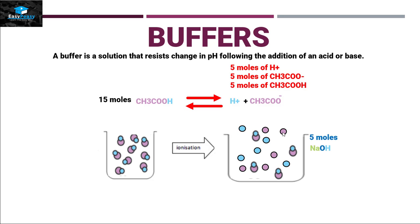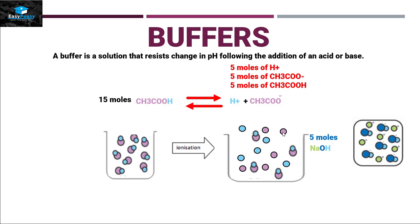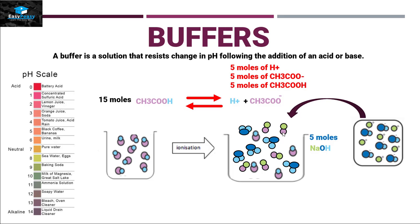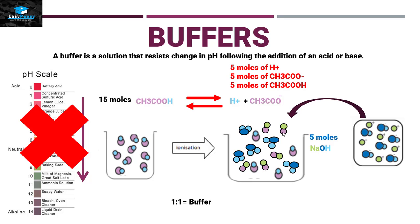Now adding 5 moles of NaOH to this solution: NaOH is a strong base, so it dissociates into 5 moles of Na⁺ and 5 moles of OH⁻. The Na⁺ ions contact the 5 moles of acetate ion, and all the OH⁻ ions bond with the H⁺ ions already present in the solution. All the incoming ions are absorbed by ions already in solution, so there is no drastic change in pH. The solution ratio is 1:1 — this is a buffer.